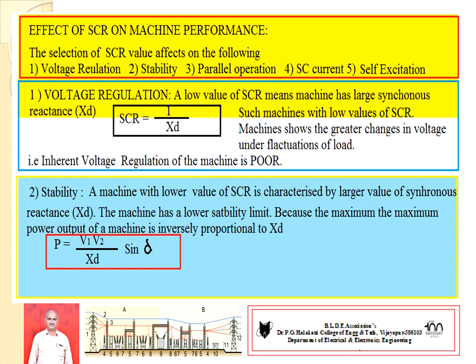That is the definition of SCR. The next part of the question asks: discuss the effect of SCR on the performance of the machine. The selection of SCR affects machine performance in the following five factors: (1) voltage regulation, (2) stability, (3) parallel operation, (4) short circuit current, and (5) self-excitation. Writing these factors quickly may earn you one to two marks.